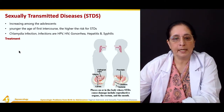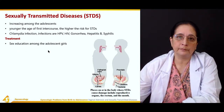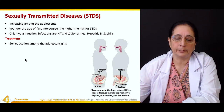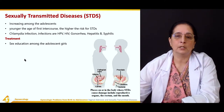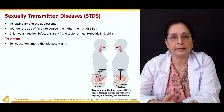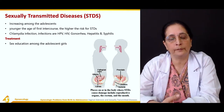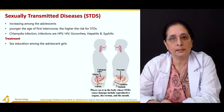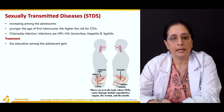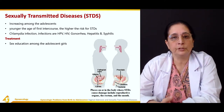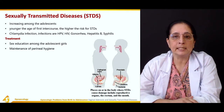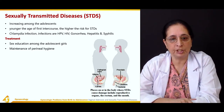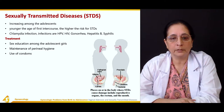Treatment and prevention includes sex education, which is very important — educating adolescents about how they can protect themselves through the use of condoms and other contraceptives. Maintenance of perineal hygiene and consistent use of condoms are also emphasized.